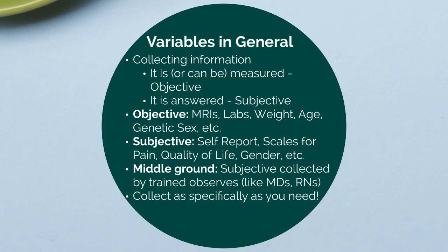There is some middle ground — subjective variables that are collected by trained observers, and those are specific to the field you're studying. The biggest thing to understand about variables is to collect them as specifically as you need or as specifically as you can. A great example is to simply ask someone their current age in years. You can always categorize age later, but if you only collect age in categories, you will not be able to use it as a continuous or numeric variable.